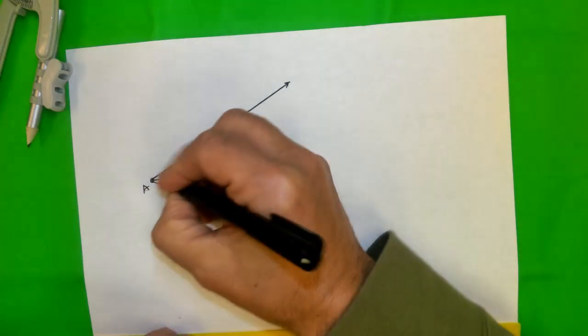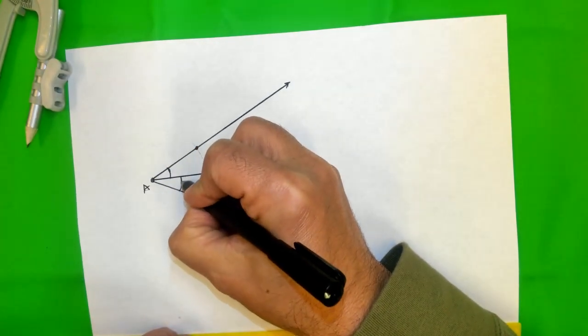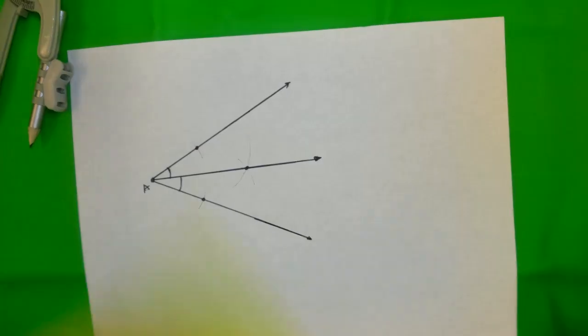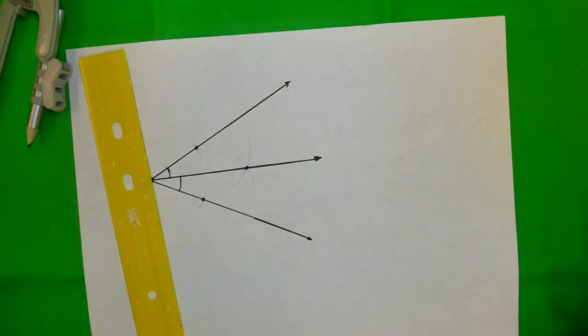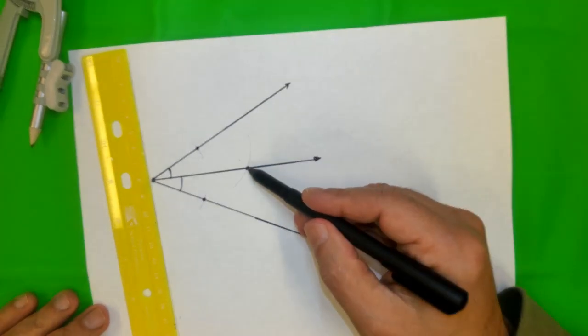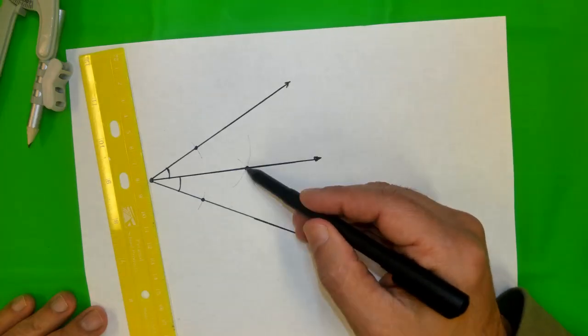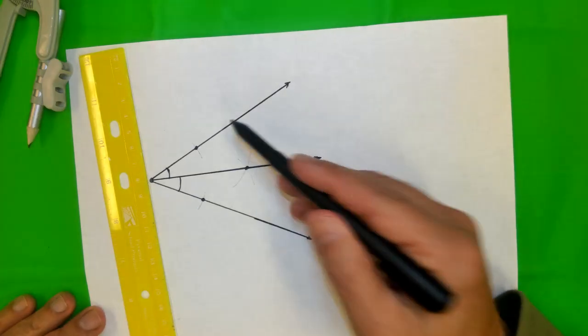That means this big angle is cut into congruent pieces. Let's have some names. But first of all, one more thing I'm going to draw here. I'm going to draw the distance, the segment, the distance from this point to the sides of the angle.